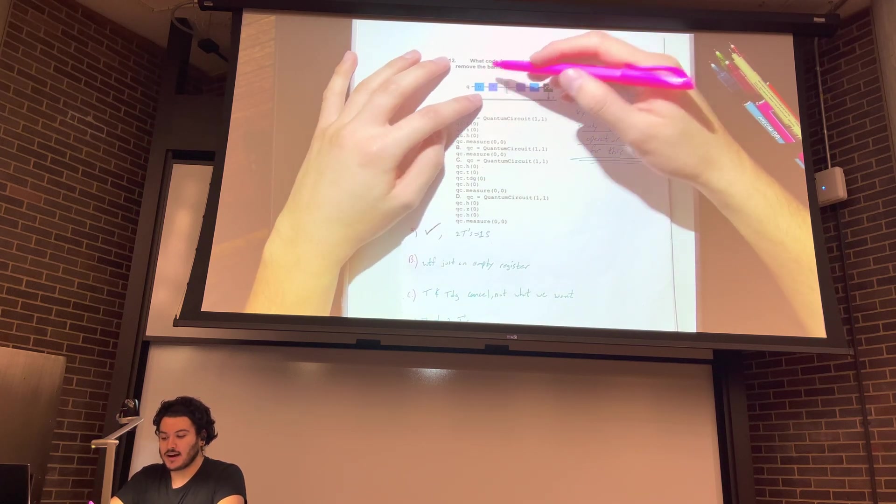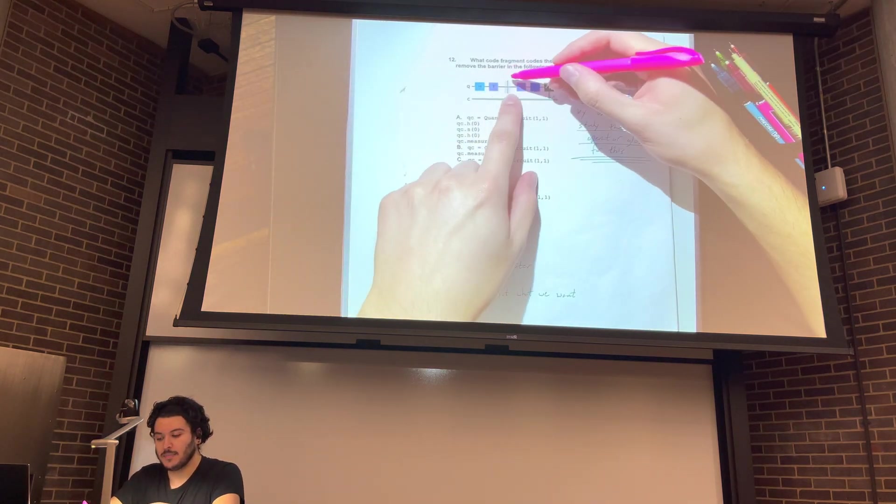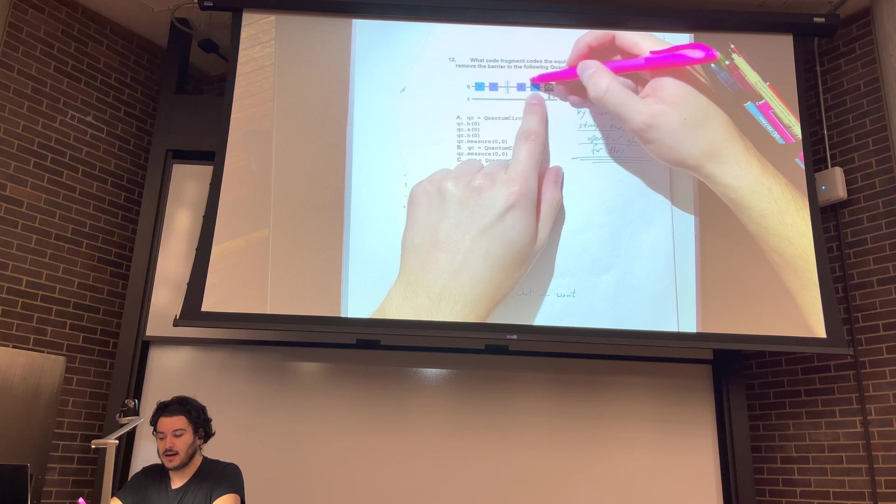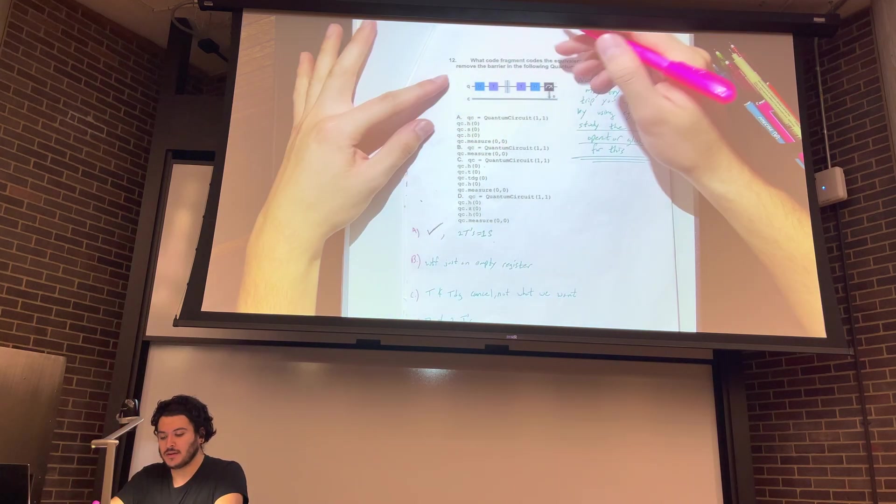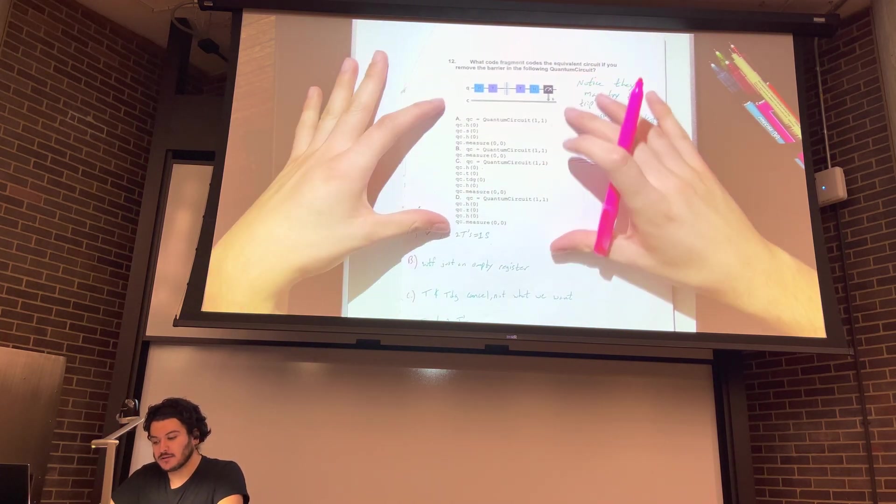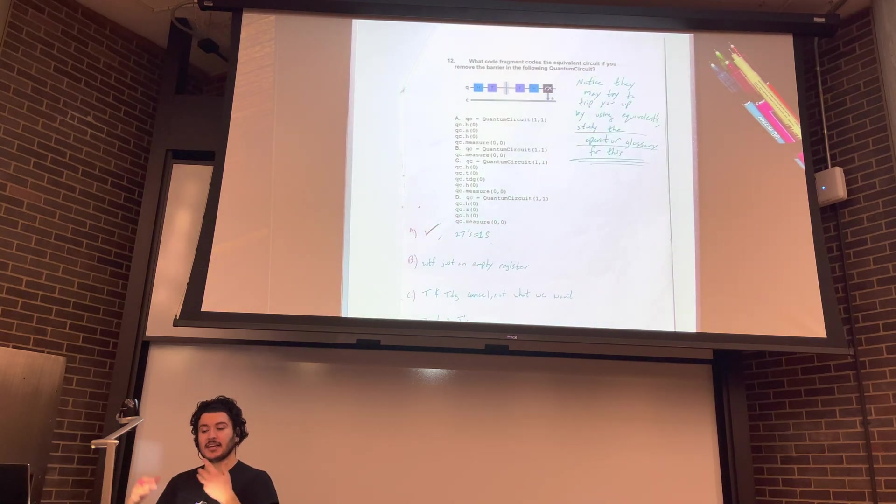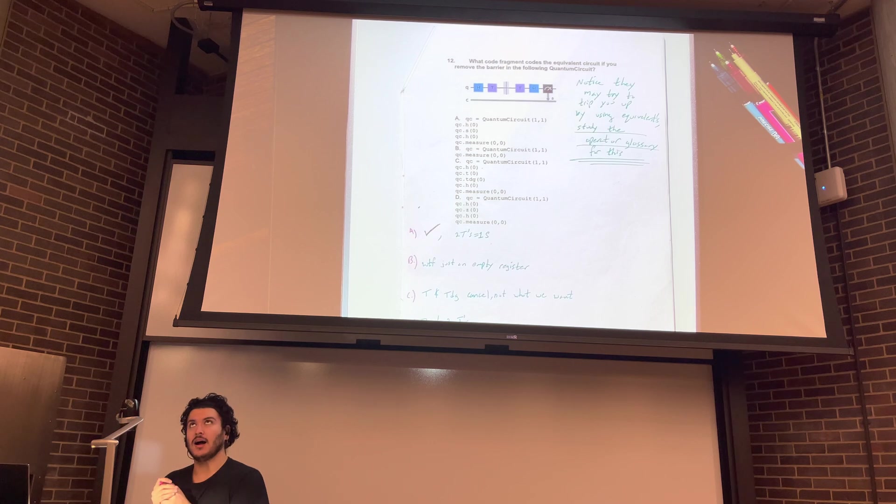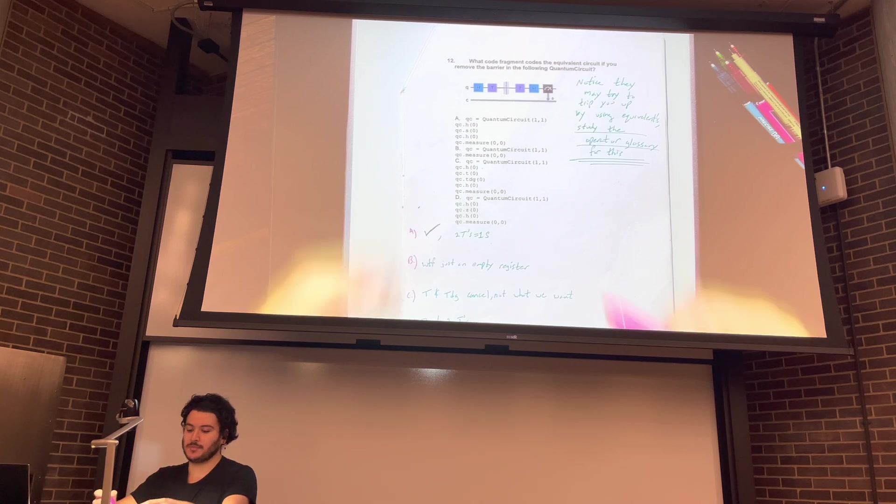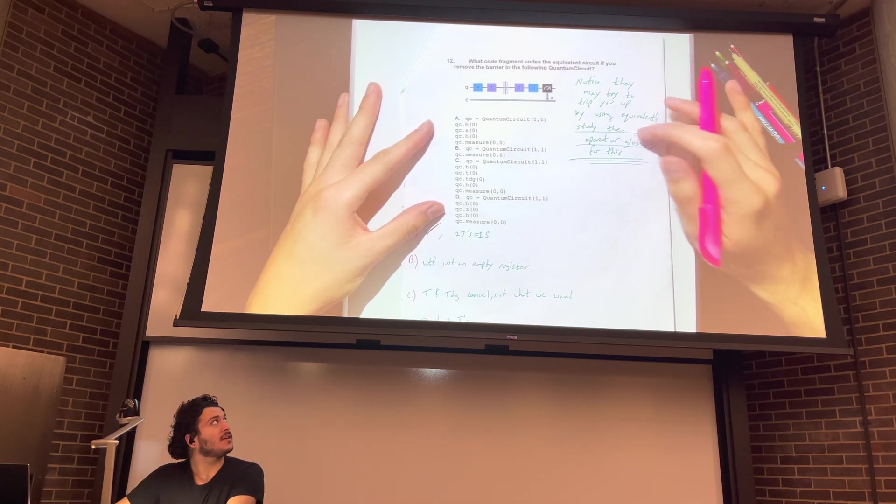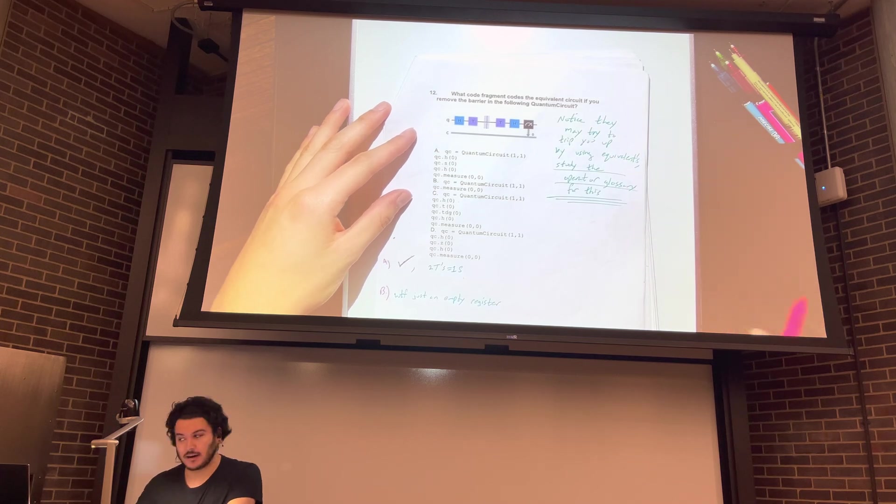So we're going to look at the main idea behind this and then we're going to look to the operator glossary. So we see Hadamard, a T-gate, a barrier, another T-gate, a Hadamard, and then a measure operation. They give us four options. We're looking for one of them that does the same thing. So again, the same idea that we see over the problems. Different routes to get to the same solution. So, we're going to follow up on this. We're going to go to the operator glossary now.